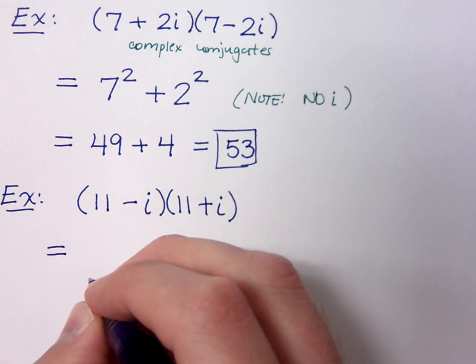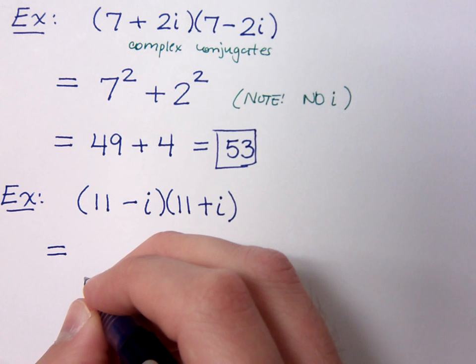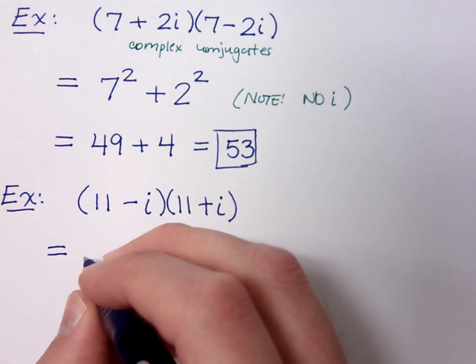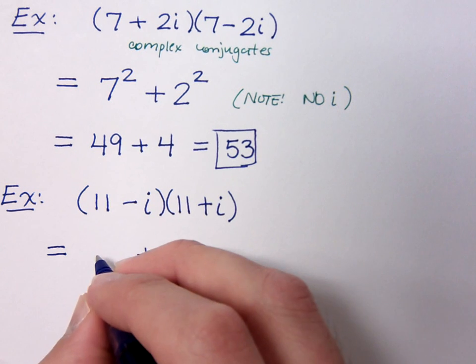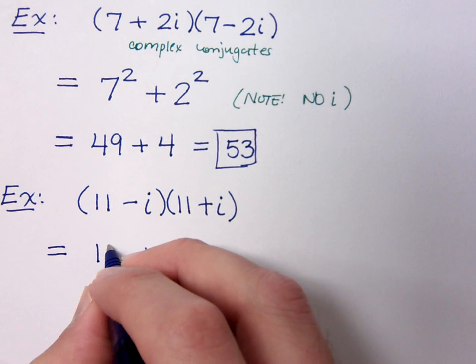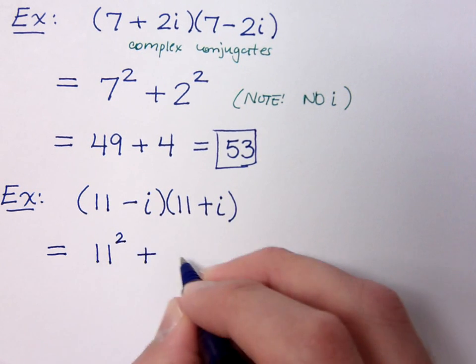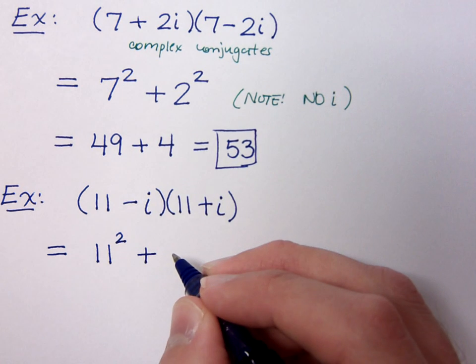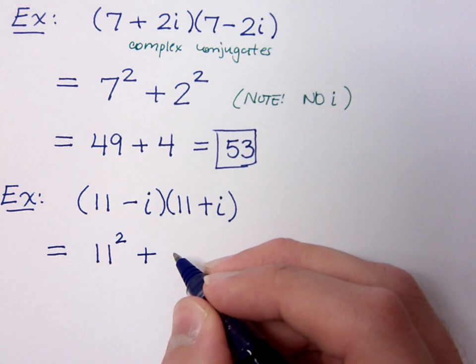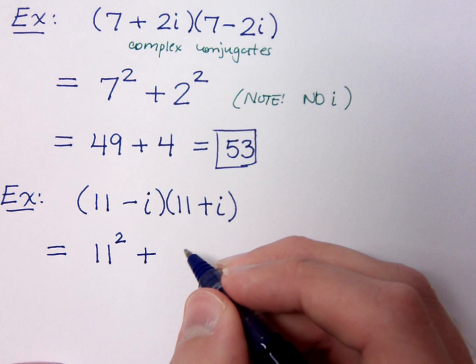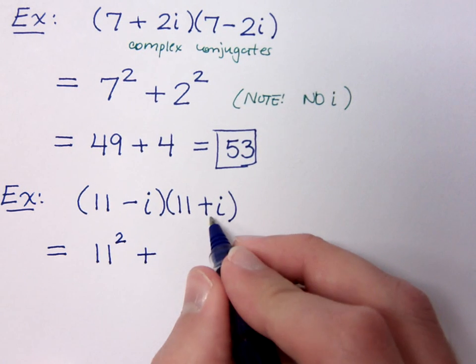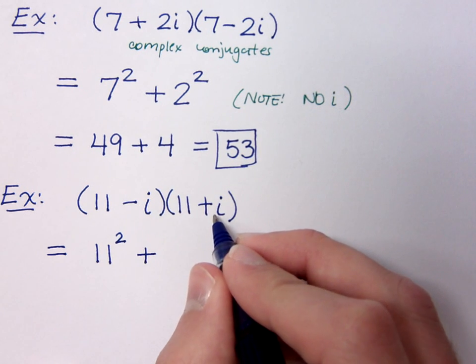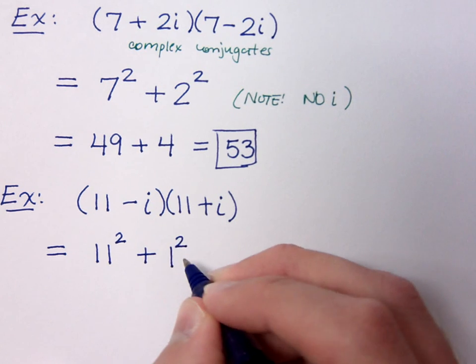Now, when I do the sum of squares, it's the sum of, well, the first square is your real part squared, so that's 11 squared, and the other part is your imaginary part squared. Keep in mind that your imaginary part is the coefficient of i. So this coefficient here is just a 1, so this is a 1 squared.